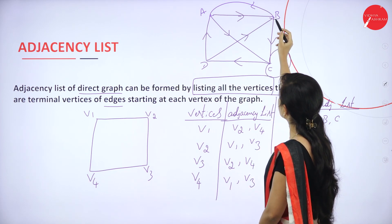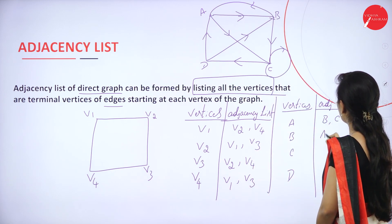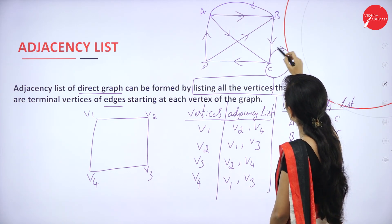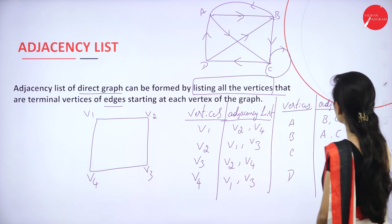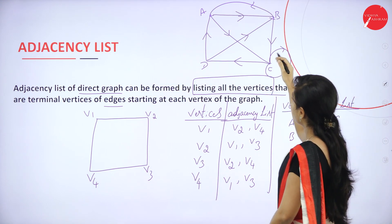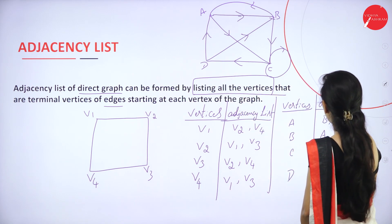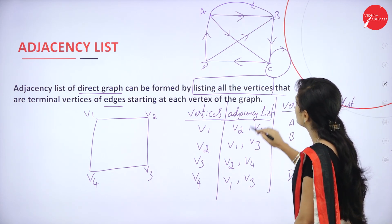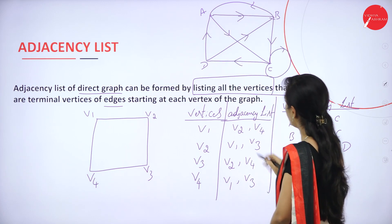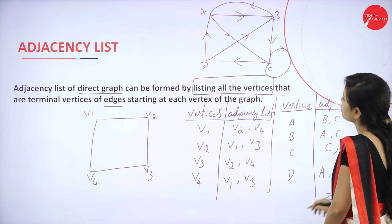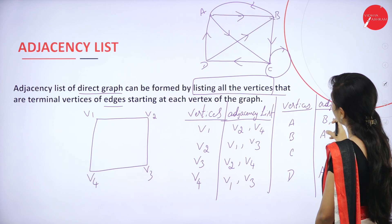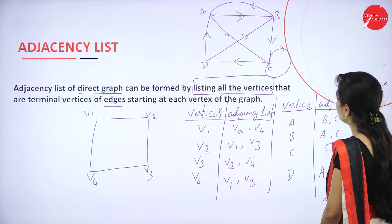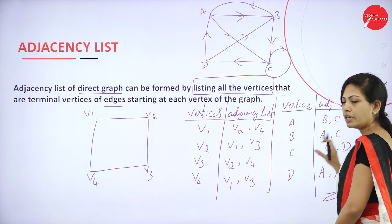The adjacency list for B is A and C (B to A and B to C). For C, the adjacency list is only C itself, because there is a self-loop, and C is not connected to B or D — except C to D and the self-loop. So C's adjacency list is C and D. For D, the adjacency list is A and B (D to A and D to B). This is your adjacency list.